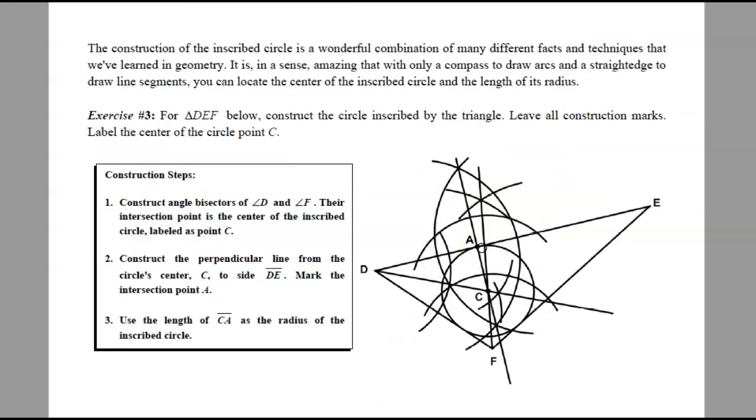All right, so on the next page, construction of the inscribed circle is a combination of different facts and techniques, and we have those listed here. So with just a compass, we're able to draw arcs and a straight edge to draw line segments, and we can locate the center of that inscribed circle. So here's what happens.